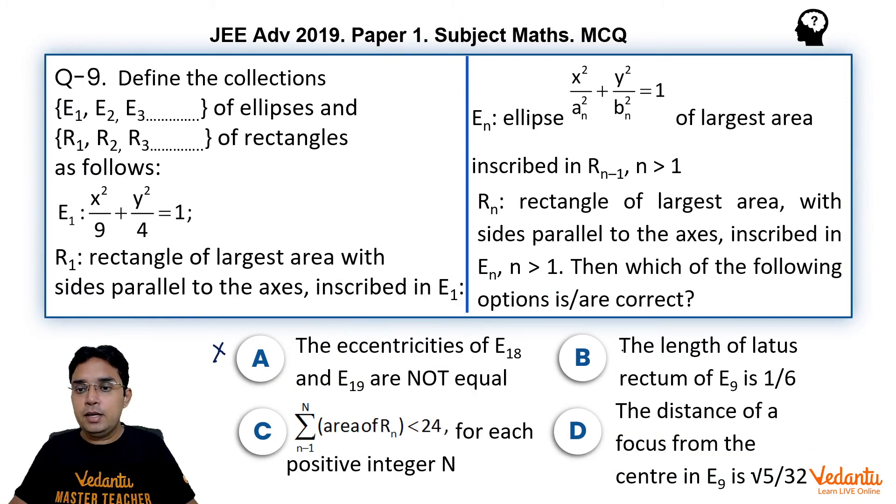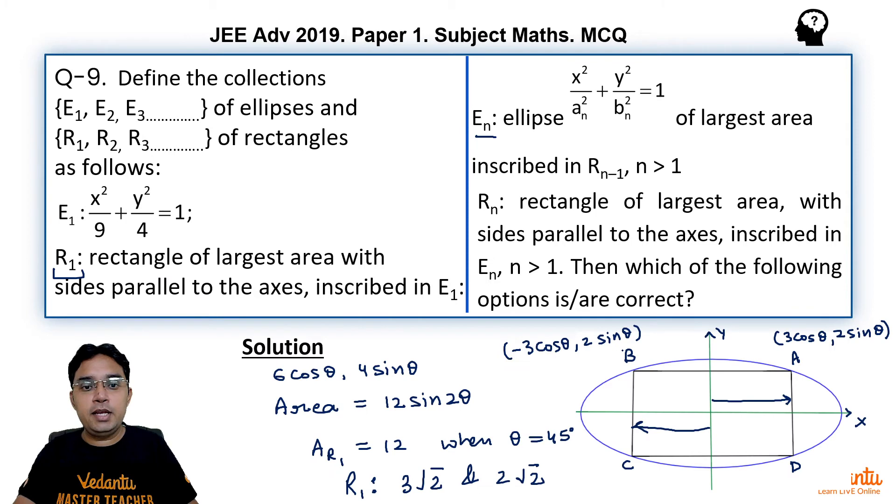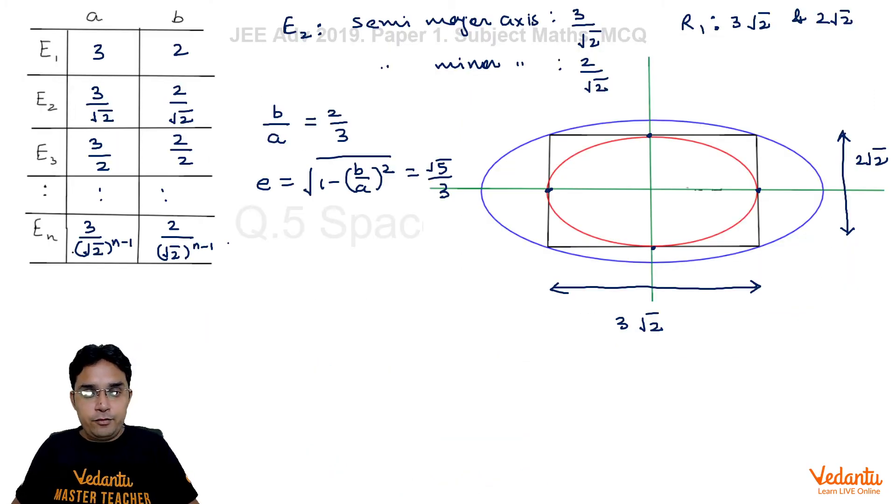Now coming to B part, length of latus rectum of E9. Now we have found a relation for E9. So for E9 also we can find semi-major axis, let me call this as a9, and that would be 3/(√2)^8. And if we solve it we get 3/16. And similarly b9 will be 2/(√2)^8. So this will be 1/8, 2/16, 1/8.